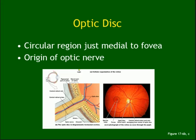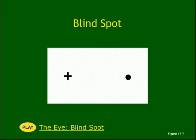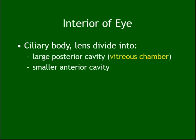The optic disc — the other name for it is the blind spot. It has no receptors; it's just a collection of fibers exiting the eye, which is why it is called the blind spot.